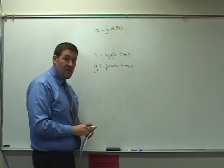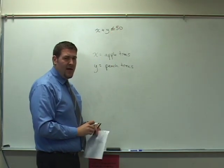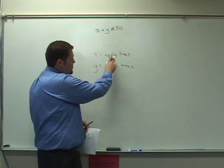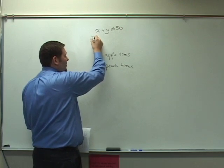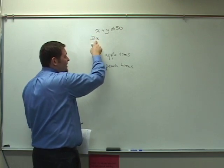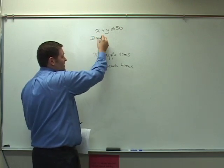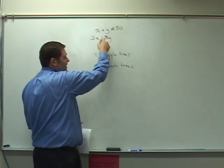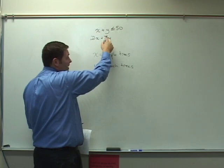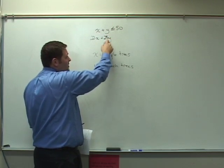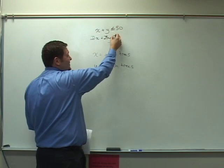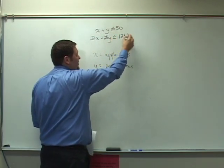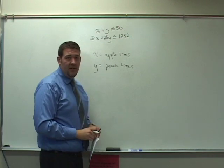Great. The second one has to do with money. We have to spend up to $1,232. Well each apple tree costs $22. So we can write that out as $22 times the number of trees x. This gives you the total cost of apple trees plus $28 times y, the money spent on peach trees, 28 times the number of trees. That total has to be less than or equal to $1,232. So there's our system of linear inequalities.